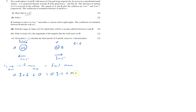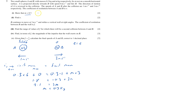This gives 1.8 equals minus 0.3 plus 3M, so 2.1 equals 3M, therefore M equals 0.7 kilograms. That completes part one.